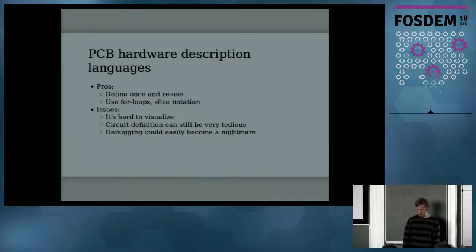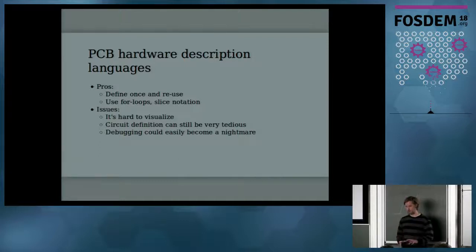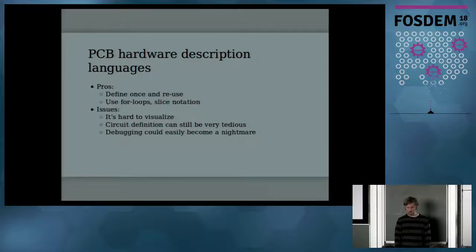The pros are that you define everything once and reuse it, using programming constructs to make design easier. Some of the issues are that it's hard to visualize what's going on — it is in the end a visual task, and you want to see where the connections are going. It can still be very tedious, and debugging could be a nightmare. That's my goal with Replicad: to use static analysis and electrical rules checks to really make it hard to introduce errors.